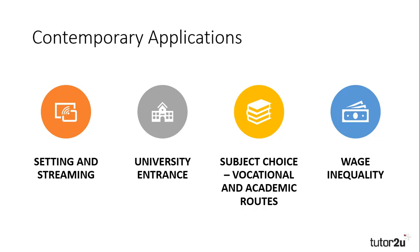Conversely, students who show little academic ability are often shifted into a vocational course where they may achieve a vocational qualification such as a BTEC or a T Level and go down a career path with lower status. Of course, this impacts on the earning potential of those students, with greater wage inequality between those of higher status and lower status, between skilled and unskilled labour.